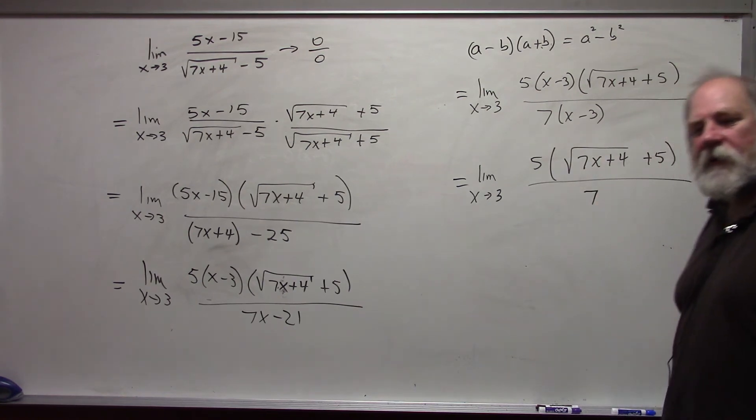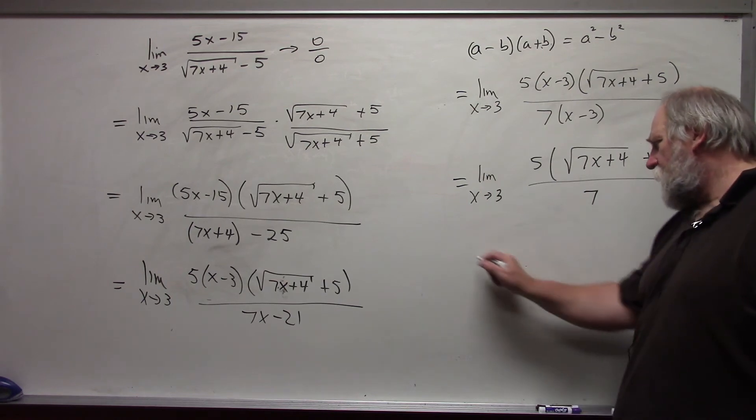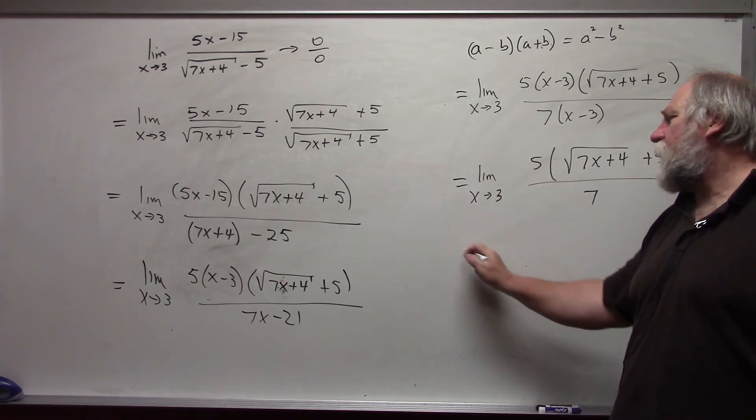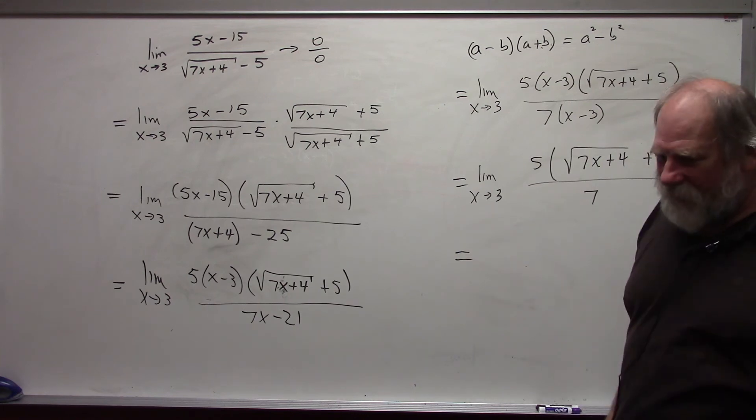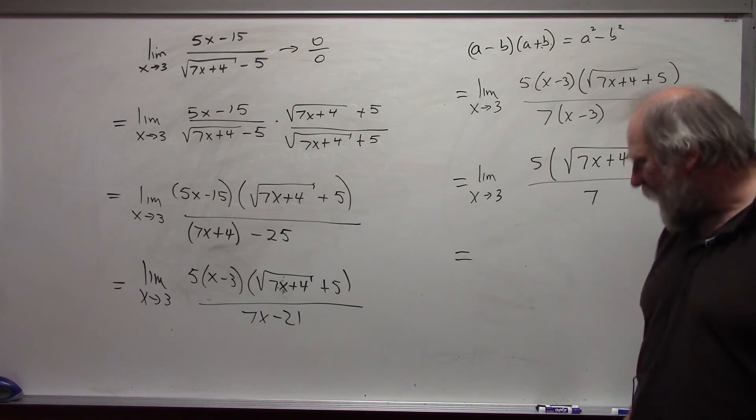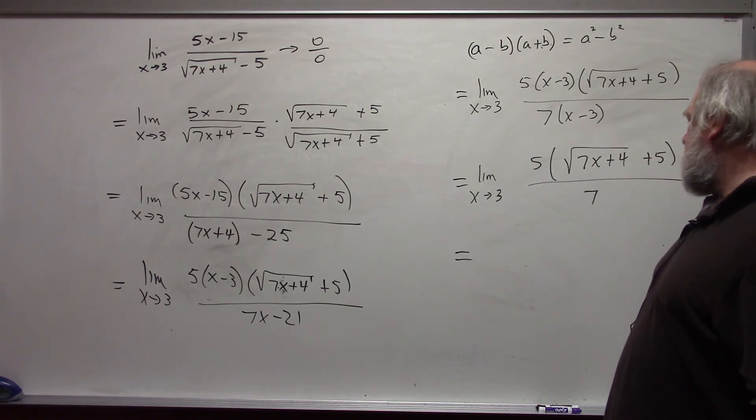And now we can evaluate this limit directly. At this point, I stop writing limit as x approaches 3. Because I'm about to evaluate it. Notice, in every step until this point, I have to write that. And this becomes 5 times.